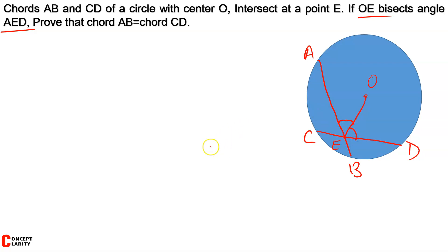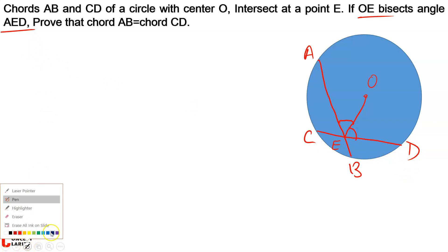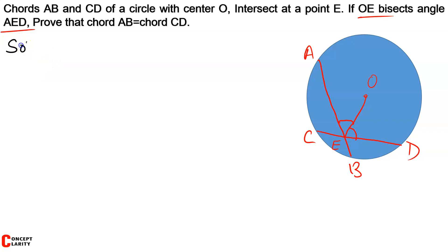After this, what we have to prove is that chord AB is equal to chord CD. It's very easy. Let me start the solution. For the solution, I need a few constructions in order to build triangles so that we can prove the similarity of the triangles.